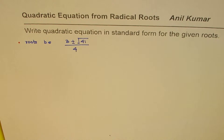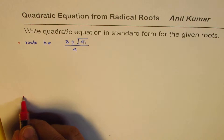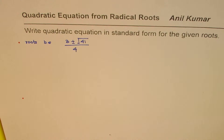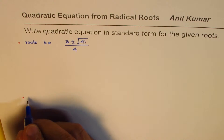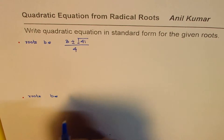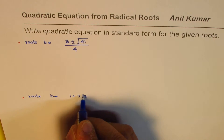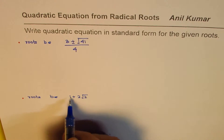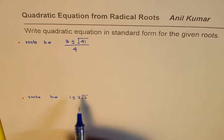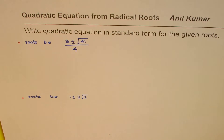That becomes slightly complicated. We can have another example here — let the roots be 2√2, and it's always conjugate roots, so plus and minus. When we are talking about radical roots, it's always plus and minus — conjugate roots.